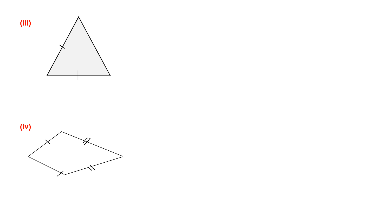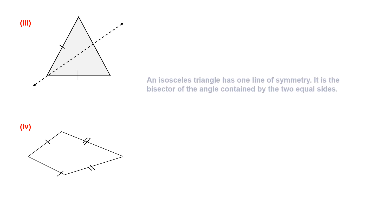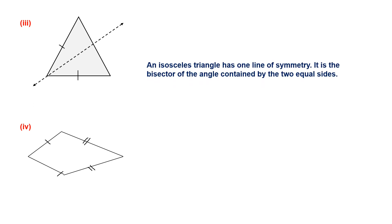Question 3, figure 3: here again we have an isosceles triangle with two equal sides. When we draw the line of symmetry, an isosceles triangle has only one line of symmetry — the bisector of the angle contained by the two equal sides — and this line of symmetry bisects that angle.